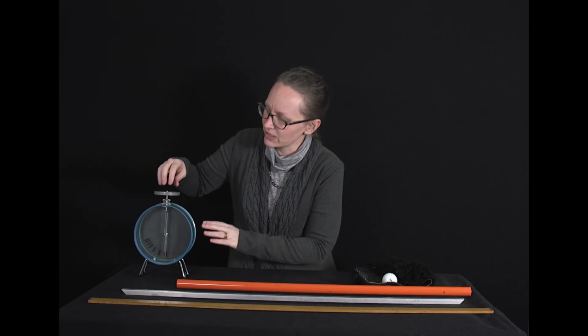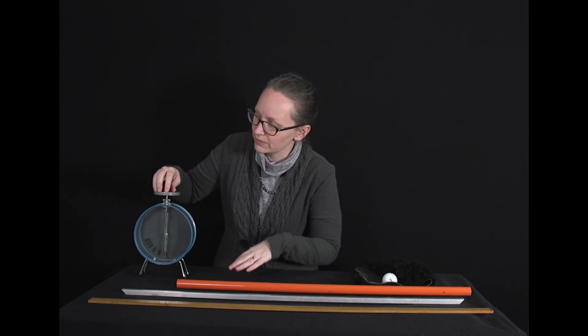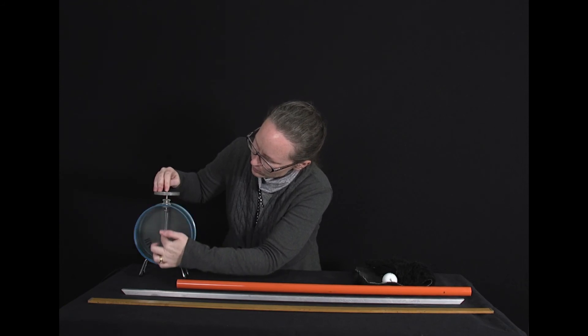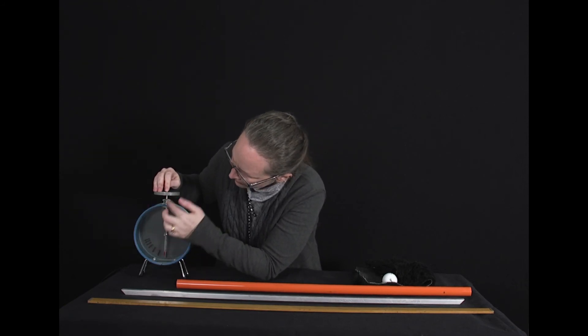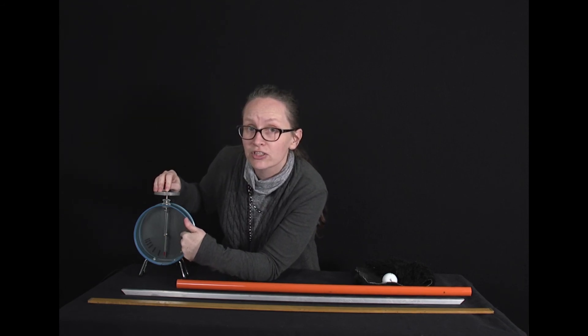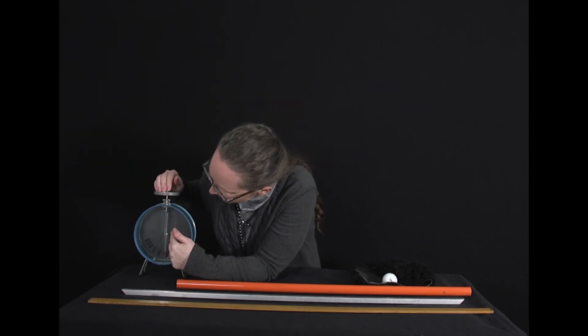So this electroscope consists of a metal conducting plate on the top, which is joined to a metal rod which runs all the way down the electroscope. Now attached to that, so it is attached so charge can pass, is a pivoted needle here.